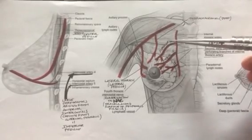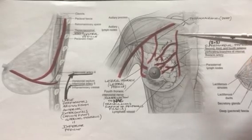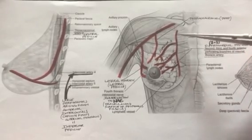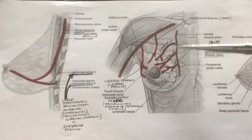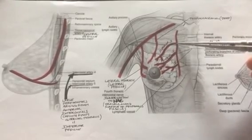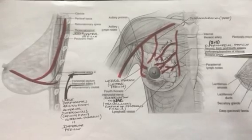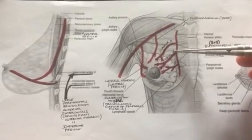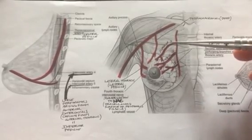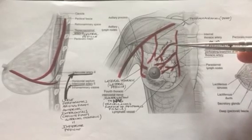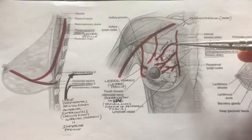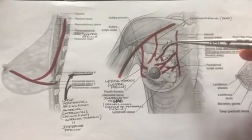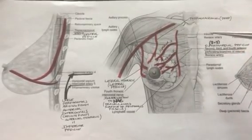Here's the superior pedicle, which is coming off the internal thoracic artery. The subclavian artery gives off the internal thoracic, which is sometimes called the internal mammary because it eventually supplies the mammary gland or breast. The internal thoracic gives off perforating branches — sometimes called the perforating branches of the internal thoracic — because they perforate through the intercostal interspaces: the second, third, and fourth interspaces. The perforator coming through the second interspace is one of the most important blood supplies to the breast, providing the majority of supply 60% of the time. So this superior pedicle is based on the second intercostal perforator coming off the internal thoracic.